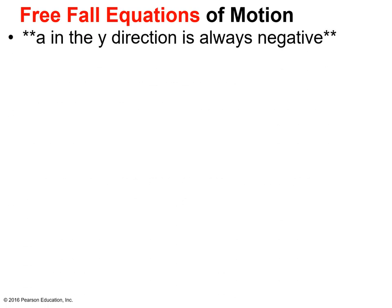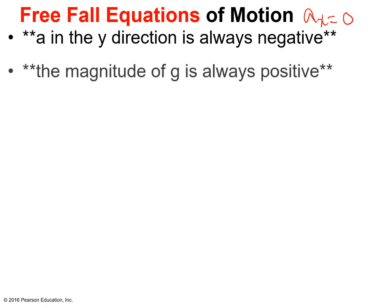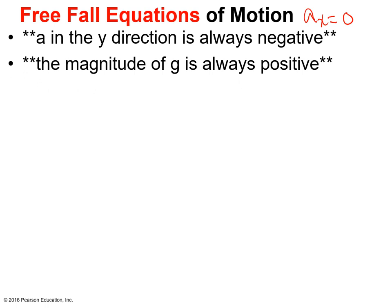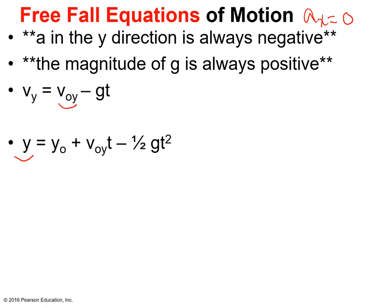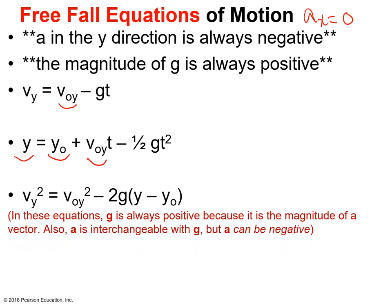Free fall equations of motion: acceleration in the y direction is always negative; acceleration in the x direction in free fall is always zero. The magnitude of gravity is always positive, 9.8 meters per second squared. First equation: velocity in the y direction equals initial velocity in the y direction minus gt. Final position in y equals initial velocity in y times t minus one half gt. And velocity in y squared equals initial velocity in y squared minus 2g times the change in position in y.